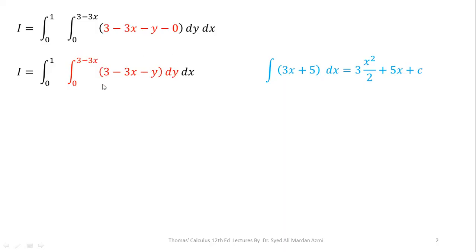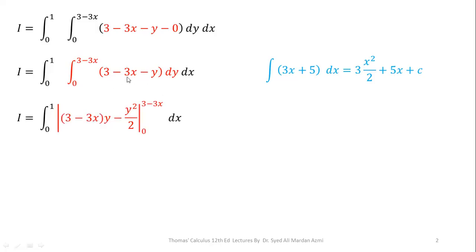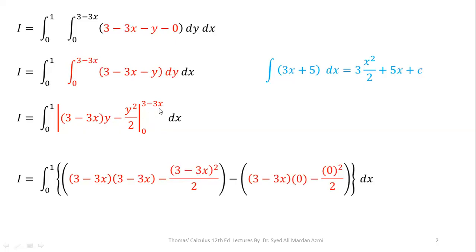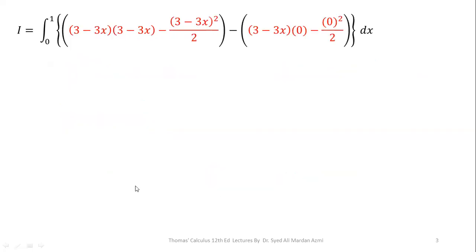Coming back to our question, with limits from 0 to 1 and 0 to 3 minus 3X, we integrate 3 minus 3X minus Y with respect to Y. With respect to Y, X remains constant, so 3 minus 3X is a constant term — treated just like 5 in our example. Integrating, we get 3 minus 3X into Y minus Y squared over 2, evaluated for the limit 0 to 3 minus 3X. Applying the fundamental theorem of calculus, the lower limit terms become 0. From the upper limit, after simplification, we get 3 minus 3X whole squared minus 3 minus 3X whole squared over 2. Taking 1 minus 1/2 equals 1/2 as a common factor, we are left with one half times the integral from 0 to 1 of 3 minus 3X whole squared.